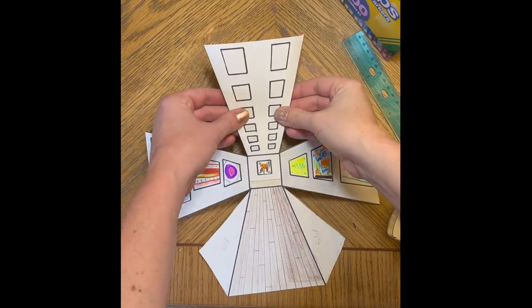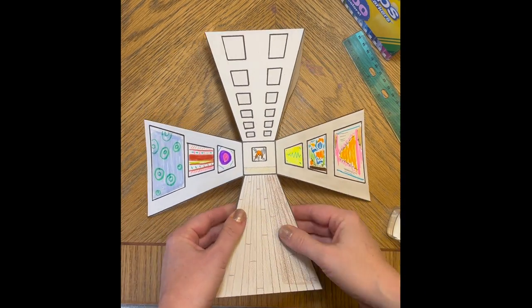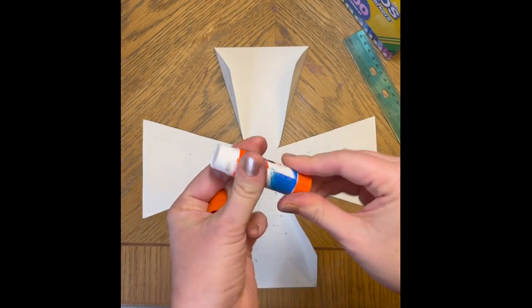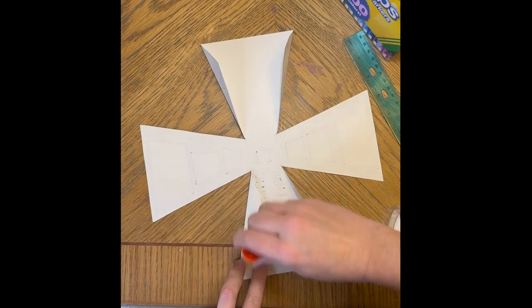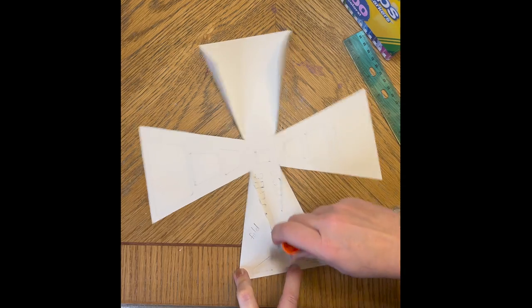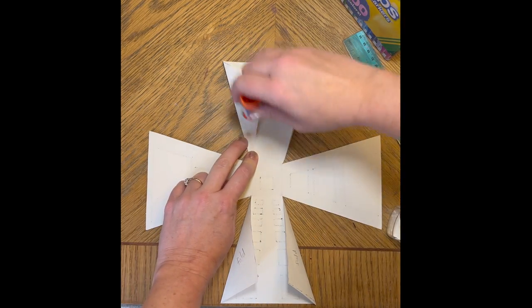Now you just fold those flaps back again and put some glue on there. Don't be afraid to put a lot. I probably could have used a little bit more.